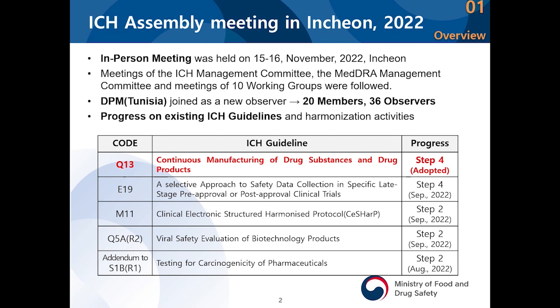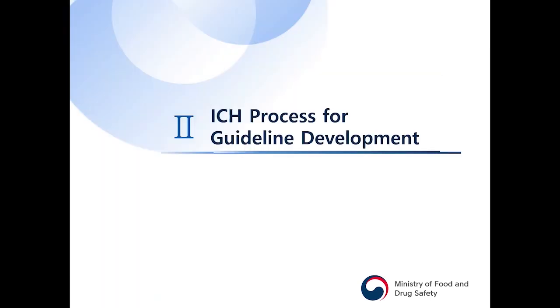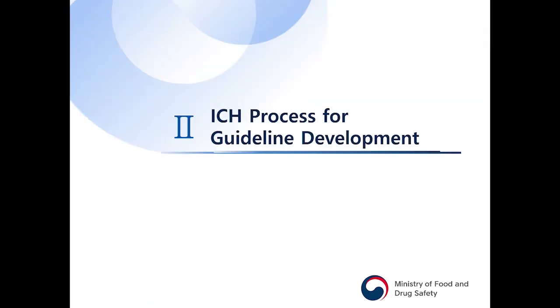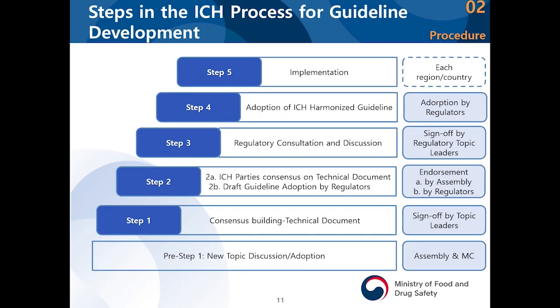At that time, there were 20 members and 36 observers, and five guidelines were determined at last year's ICH assembly. Q13 was adopted, so it moved to step four and became a formal guideline of ICH. E19 and S1B were at step two or step four — those were the decisions made at last year's assembly.